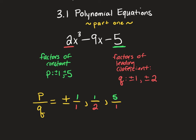And then we'll take the five, and we'll have to divide it also by the one and two. Five over one, and five over two.